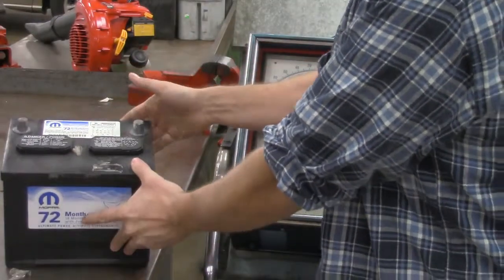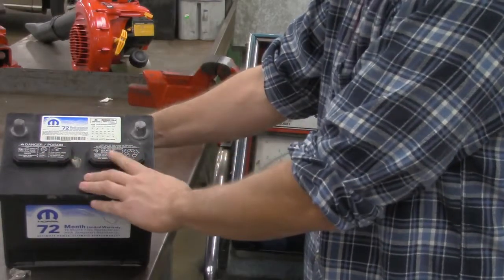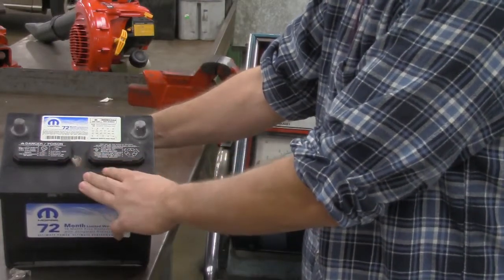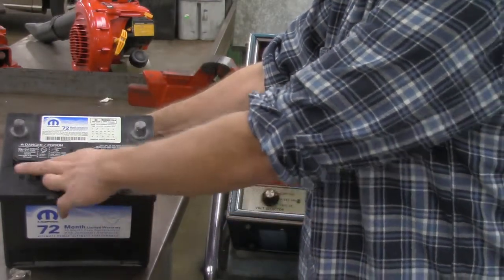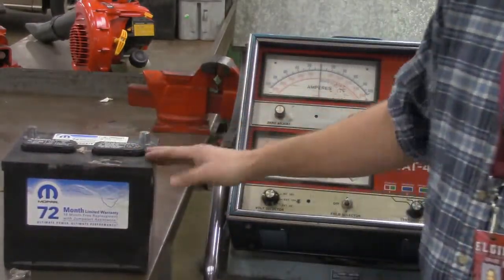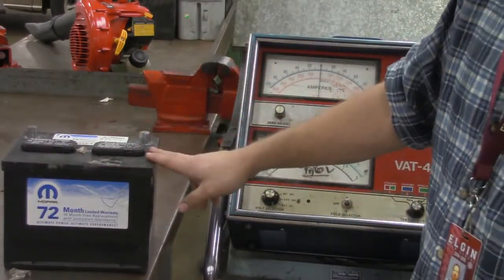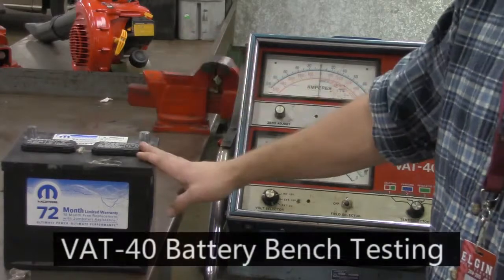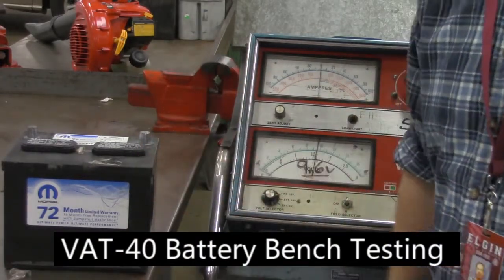And this is what's referred to as a serviceable battery because we have these caps that are located on here. We can take these caps off and we can service each individual cell. We can check the battery acid contents in there and we can fill it up if we need to with distilled water. But we're not going to mess with that today.